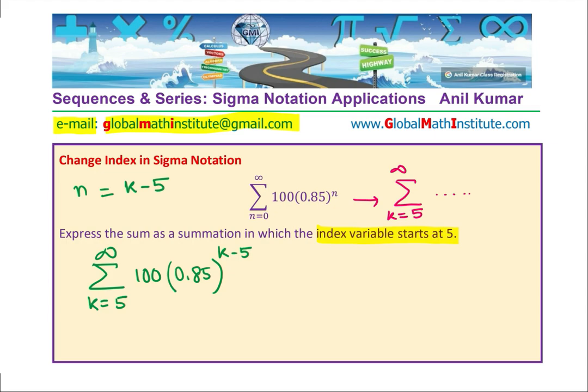So, you can now see that you can check the result. How can you check the result? Just put k as 5. Check. So, if k for this is equal to 5, in that case, the term will be 100, 0.85 to the power of 5 minus 5, which is 0. Which is 0. You see, we get, if I put n equals to 0, I also get the same term there. You get the idea. Exactly same, which is 100.